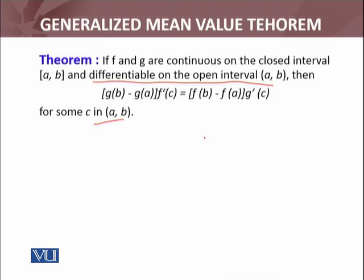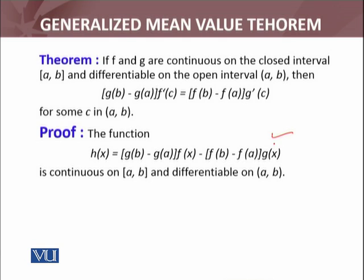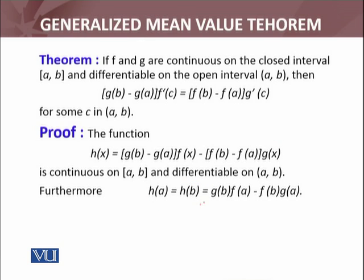In exactly the same way, we prove it. We define a function h(x) which is the difference of these two things: h(x) equals [g(b) - g(a)]f(x) minus [f(b) - f(a)]g(x). Then h will satisfy the hypothesis of Rolle's theorem. It's continuous and differentiable on [a, b], and h(a) equals h(b).